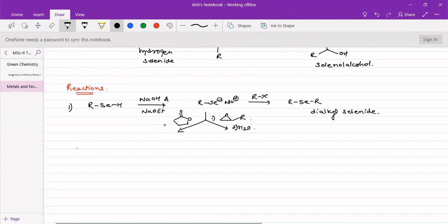With lactones, it will be a ring opening reaction. And with the epoxide again, similar to what we have seen just now, we get this alkyl selenol.